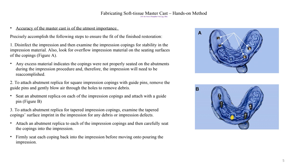If we believe the impression material was too much around the implant and may have pushed the impression coppings out of position, we can call the doctor and ask them to retake the impression. Once we examine the impression and confirm it is good and the impression coppings are stable, we are ready to attach the replicas. The purpose of the replicas is to indicate in our master cast where the implants are — the location, position, and angulation — exactly as they are in the patient's mouth.